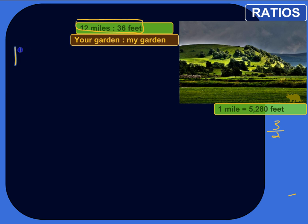Let's rewrite this as a fraction, though. The ratio of the length of your garden to mine is 12 miles to 36 feet. So these are measurements, specifically measurements of length, and they're in different units. I'm measuring your garden in miles and mine in feet. Those are two different units.